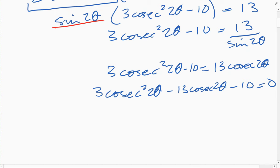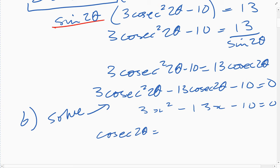It's just a quadratic in disguise. It's the same as 3x squared minus 13x minus 10 equals zero. If you solve that quadratic you should get cosec 2 theta is 5 or minus 2 thirds. If you do the reciprocal of both of those, you'll get sine 2 theta is 1/5 or sine 2 theta is minus 3/2. But that's outside the range of sine because sine is always between minus 1 and plus 1, so that's going to have no solutions.